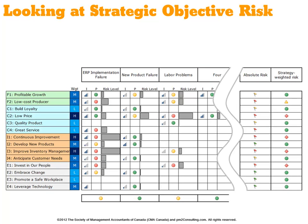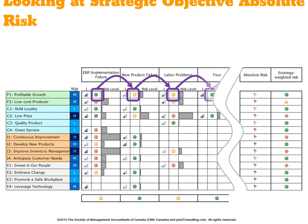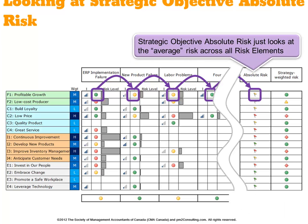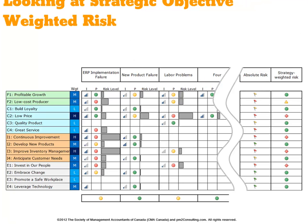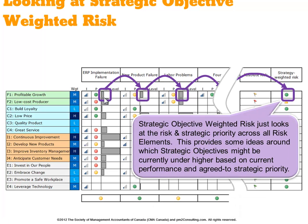We can extend this by any number of risk elements, allowing us to add up across all of them to determine the absolute risk — the average risk occurring across each risk element. This tells us, on average, what risk is occurring against a given strategic objective. More powerfully, since each bar chart represents the strategically weighted impact of that risk, we can add those up across all risk elements to give a net score of the strategically weighted risk likely occurring with respect to each strategic objective.